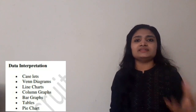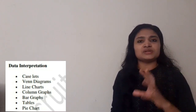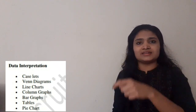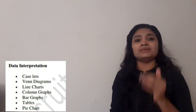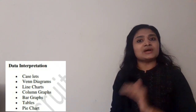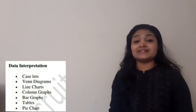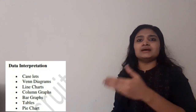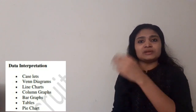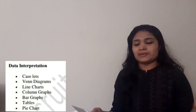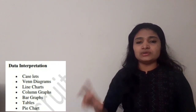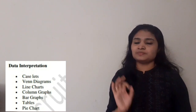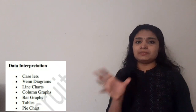Next is Quantitative Aptitude and Data Interpretation. For Data Interpretation, some charts or graphs will be given — such as column-based or line-based charts — and you have to answer questions based on those diagrams. Topics to prepare for Data Interpretation include: bar graphs, histograms, table format, pie charts, Venn diagrams, line charts, and column graphs.